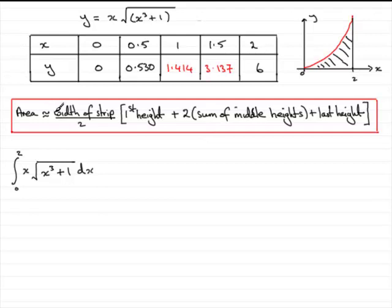is roughly the width of a strip divided by 2. Now these strips, we can see from the table what the widths are going to be, they're going to be half a unit. You can see from 0 to 0.5, 0.5 to 1 and so on, they're half a unit.